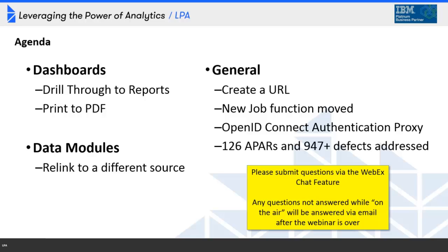The first enhancement many of us have been looking forward to is the ability to map drill-throughs from your dashboard or story to a report. I'll demonstrate how to enable this drill-through capability. I've already written my drill-through reports and dashboards — I'll show you how to link them up, review the reports and dashboards, and then connect them. I'll also show you the new feature that allows you to print your dashboard to PDF output.